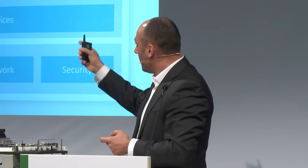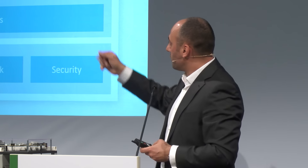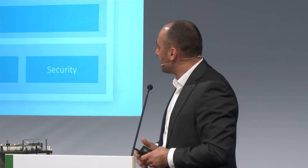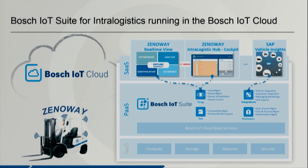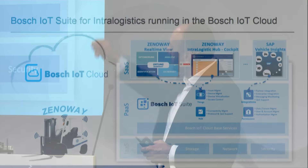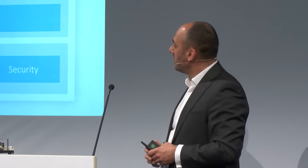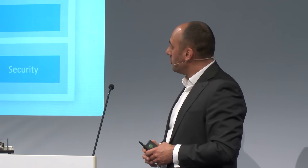Here, in a little bit more detail: we use the Bosch IoT Suite — specifically the asset management, the connectivity management, and all the protocols — to really make the service and connect the vehicles in a smart and reliable way. And once we have this data in our hub, we are able to provide all these services.